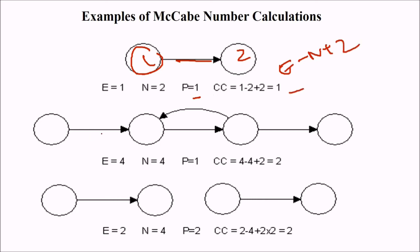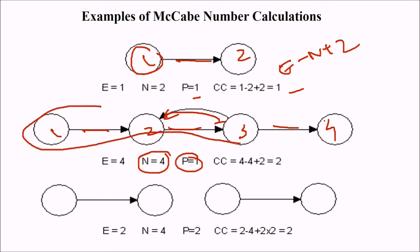Let us compare. How many edges are there? 1, 2, 3, and 4. Number of edges are 4. Number of nodes: 1, 2, 3, 4. So 4 edges, 4 nodes. How many predicates are there? There is no external, this is all inside, so it will be 1. So 4 minus 4 plus 2, that is 2.